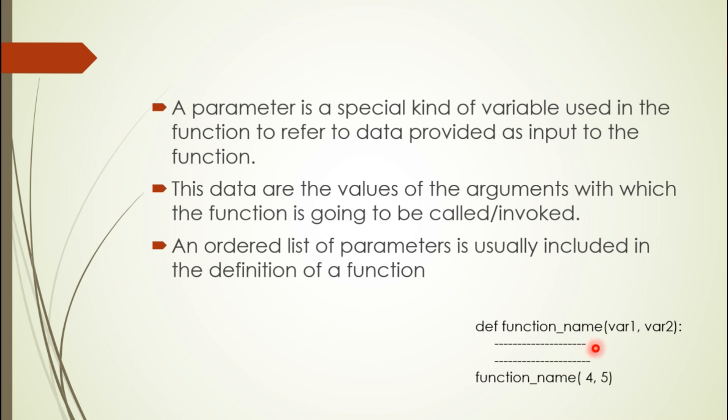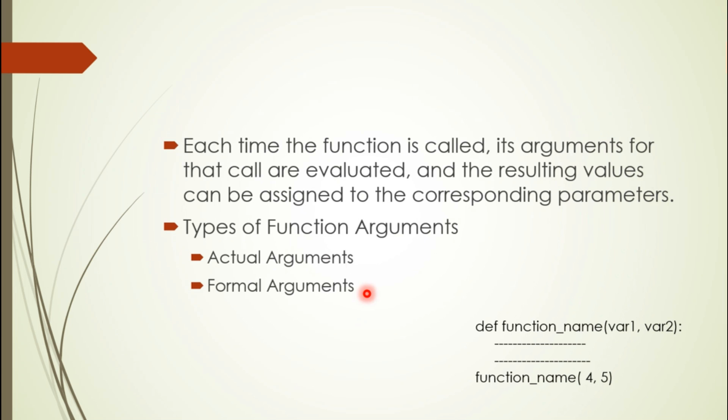These values are passed into the parameters or arguments. This can be an ordered list of parameters. Usually we pass a list where items are in order. If 4 is passed, it goes to variable one; 5 goes to variable two. Each time the function is called, whatever arguments are there, first they are called and evaluated. When we call the function and pass arguments, first they are evaluated.